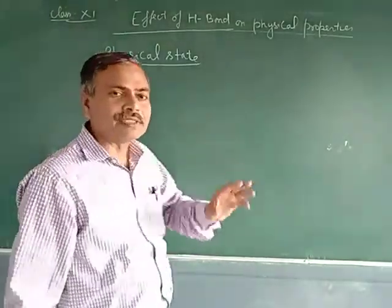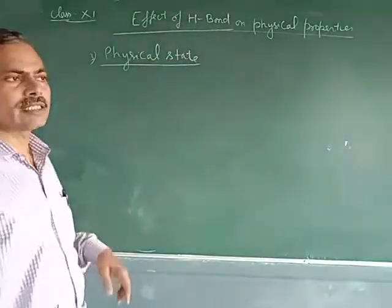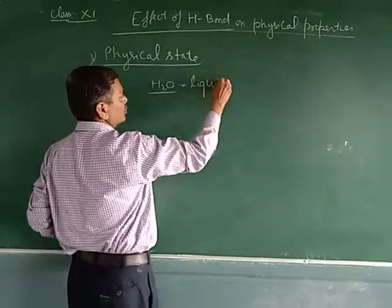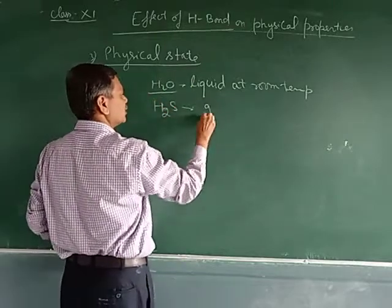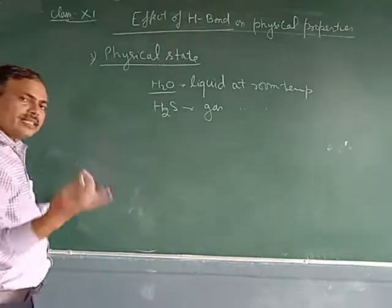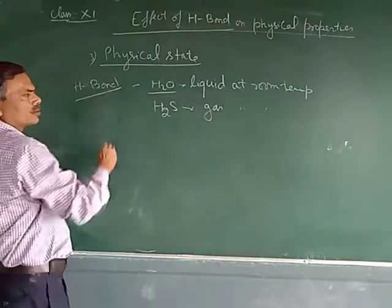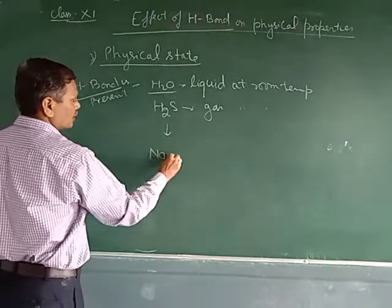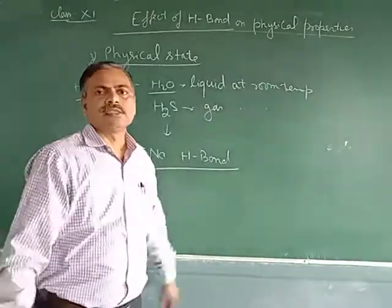Hydrogen bonding also affects the physical state of a compound. For example, water is liquid at room temperature, while H₂S is a gas at room temperature, although oxygen and sulphur belong to the same group. The reason is that in water, hydrogen bonding is present, but in H₂S there is no hydrogen bond, so the molecules are far apart and exist in the gas state.